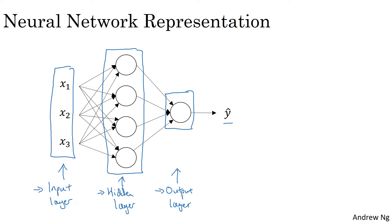Let's introduce a bit more notation. Whereas previously, we were using the vector X to denote the input features, an alternative notation for the values of the input features will be A superscript square bracket 0. And the term A also stands for activations. And it refers to the values that different layers of the neural network are passing on to the subsequent layers.